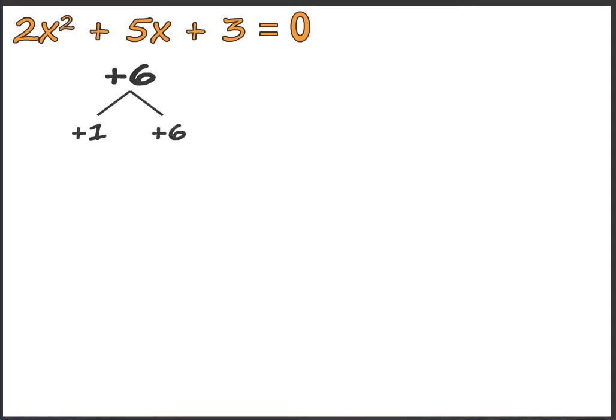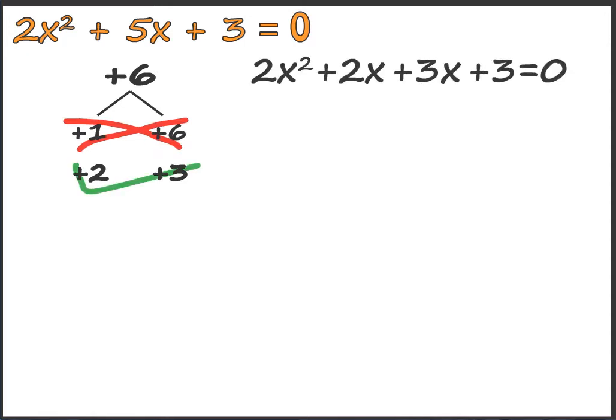The possible factors are plus 1 and plus 6, or plus 2 and plus 3. Can you tell which one is appropriate? When you add 3 and 2 we get 5, so we go with plus 2 and plus 3.